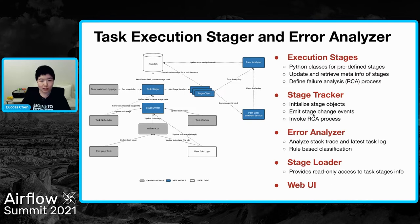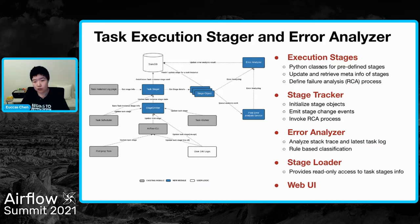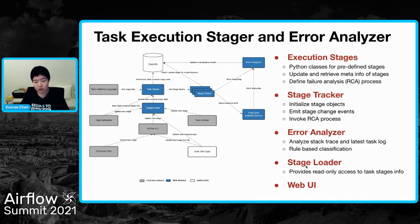Now let's take a step back and look at, from the high level, how this task execution stager is implemented. This feature contains five components. Aside from the UI component, there is first the execution stages — Python classes for predefined stages. Second, the stage tracker, which initializes the stage objects for a task instance and emits stage change events, evoking the failure analysis process if failure happens. Third, the error analyzer, which currently uses a rule-based classifier to categorize errors in the task log and identify failure causes. And fourth, the stage loader, which abstracts stage objects and provides read-only access to task stage information — a handy interface for the API and UI to read stage data from.